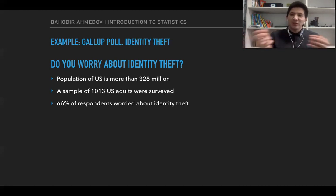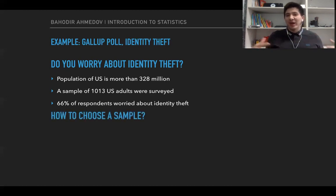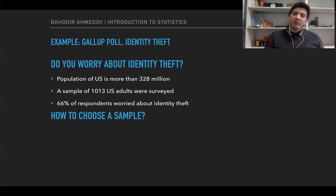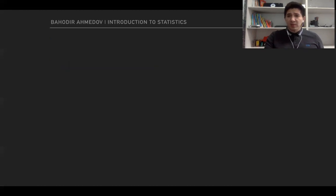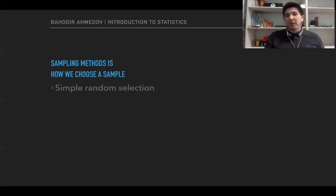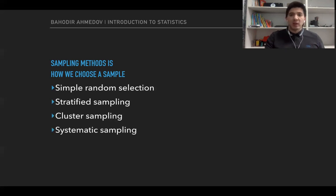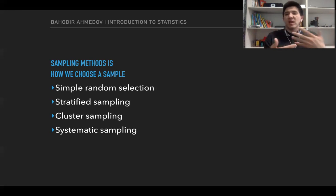The main question remains: how to choose those 1,013 people — do they go outside and choose randomly, or is there some system behind creating the samples? The ways of creating samples are called sampling methods. In statistics we're going to talk about four common sampling methods: simple random selection, stratified sampling, cluster sampling, and systematic sampling.